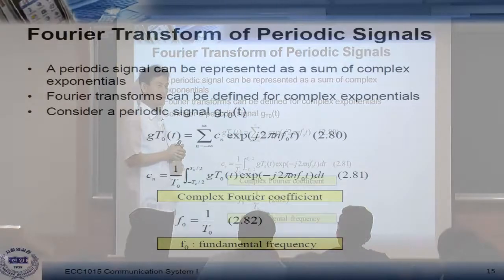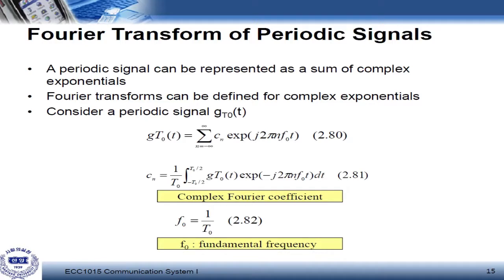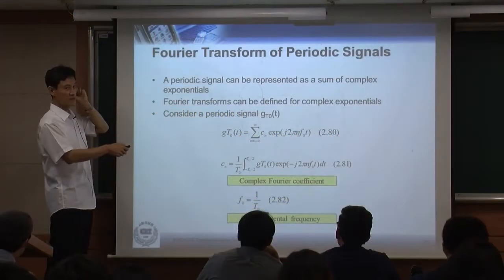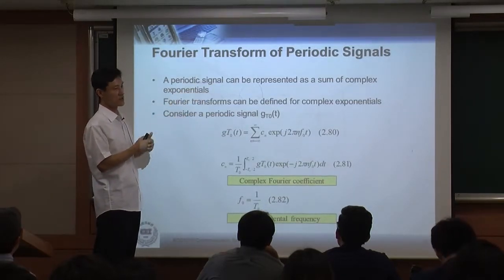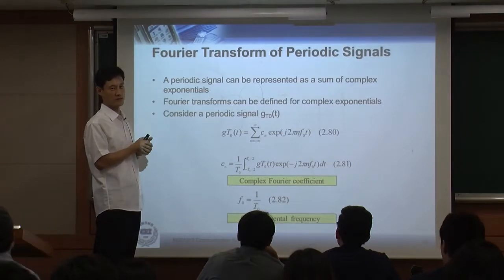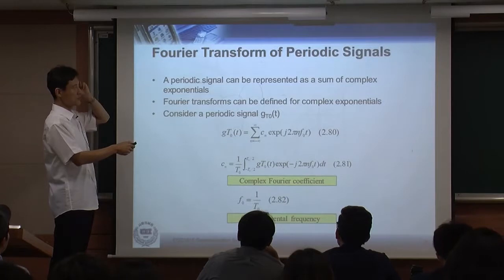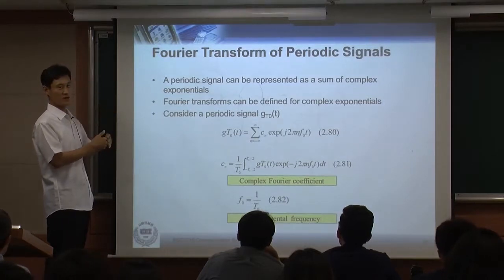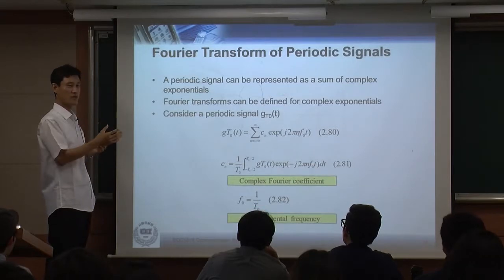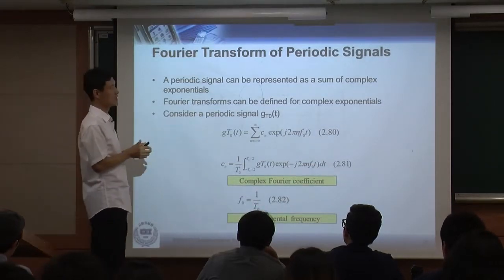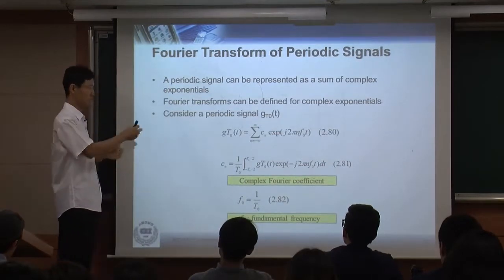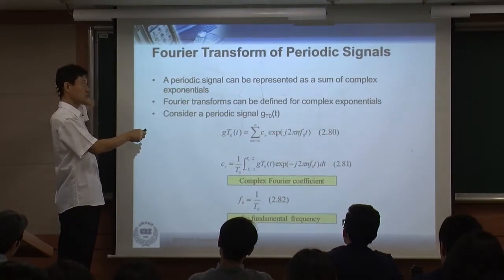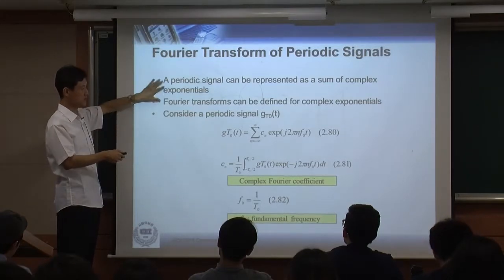We didn't discuss this last week, but it's very important. This covers the Fourier transform of periodic signals. We have many different kinds of signals: continuous or discrete time, periodic or non-periodic, deterministic or random. One common type is periodic signals like sine and cosine functions, which are always periodic — we see periodic signals in many different systems. What happens when you do the Fourier transform of periodic signals is what we want to discuss.